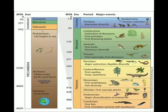Cenozoic means recent life, Mesozoic means middle life, and Paleozoic means ancient life. The further subdivision of the eras into 12 periods is based on identifiable but less profound changes in life forms.